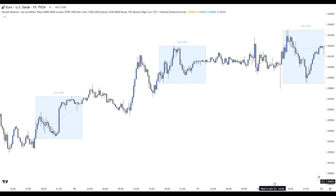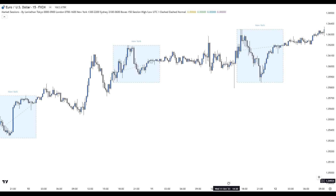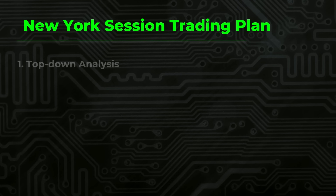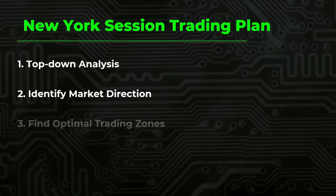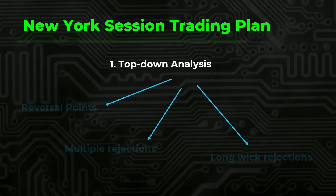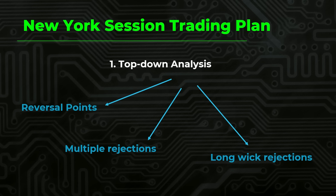Now that you know the characteristics of the New York session, let's dive into technical analysis and the trading plan. We have simplified this trading plan into four steps. In the first step, we start our trading day with a top-down analysis. This analysis allows us to get a major view of market direction and key levels of market structure. Starting from the daily timeframe, we will mark the most recent key areas to which the price might react. The major levels we are looking for are reversal points, multiple rejections, and long wicks.